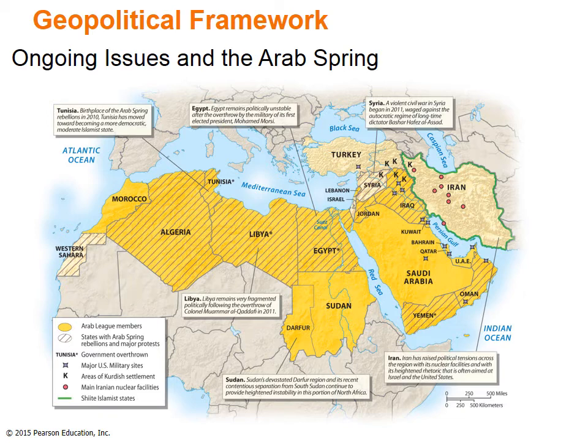Ongoing geopolitical issues have plagued this region. Many countries are members of the Arab League, focused on Arab political and economic unity. The Arab Spring rebellions, which began in 2010, are a series of public protests, strikes, and rebellions against state authority, often facilitated by social media. They called for fundamental government and economic reforms focused on widespread government corruption, limited opportunities for democracy and free elections, rapidly rising food prices, and the enduring reality of widespread poverty and high unemployment, especially for people under 30.